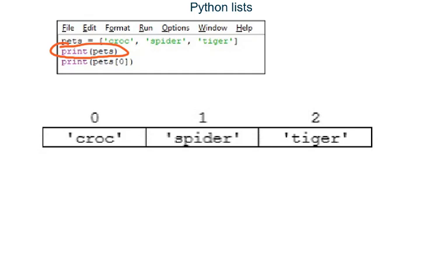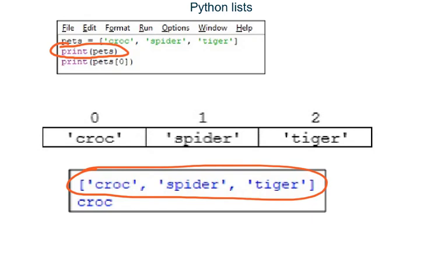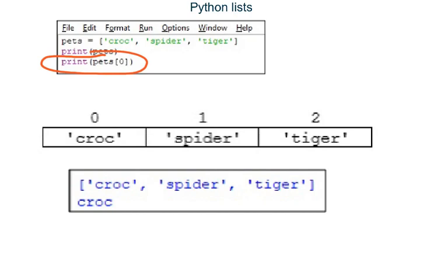Line two of the program prints out the list named pets, so when the program is run we see 'croc spider tiger'. Line three of the program outputs what is at index position 0 of the pets list, so 'croc' is output.